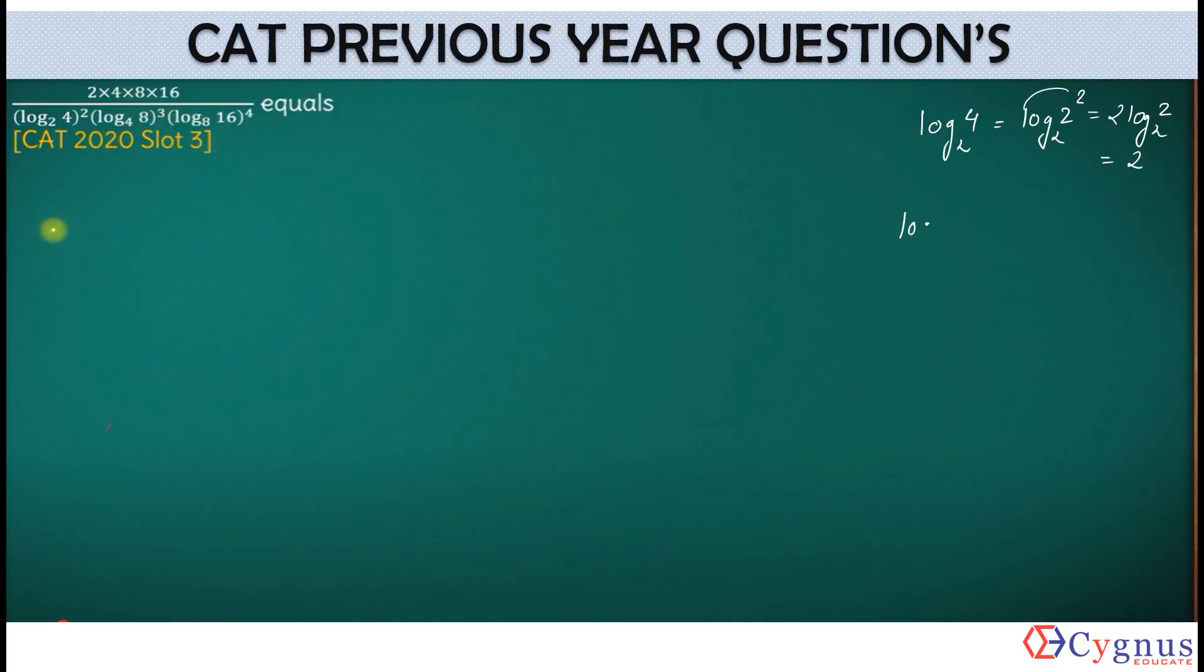What's the next term? Log of 8. This 8 can be written as 2 cube. And what's the base here? 4. 4 can be written as 2 square. So effectively, this becomes 3 by 2 log of 2 to the base 2, which is equal to 3 by 2.